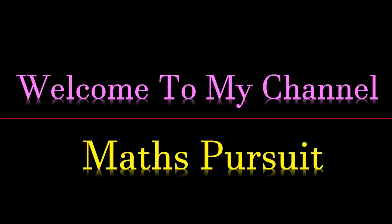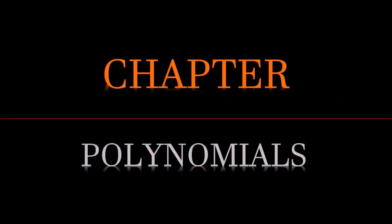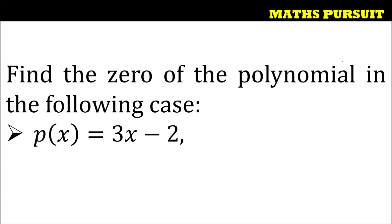Welcome to my channel Maths Pursuit. Today we will look into questions from the chapter called polynomials. The given question is: find the zero of the polynomial in the following case, and the given polynomial is p(x) is equal to 3x minus 2. Let us see how we can find out the zero of the given polynomial.